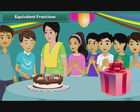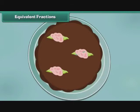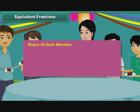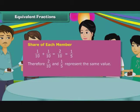Equivalent fractions. Let us take a second look at Rishabh's birthday cake. It is divided into ten equal parts. Suppose none of Rishabh's friends is interested in the cake. Hence, Rishabh offers two pieces of cake to each member of his family. Each member gets one-tenth plus one-tenth, which equals two-tenths of the cake, which is the same as one-fifth of the cake. Therefore, two-tenths and one-fifth represent the same value. Such fractions are called equivalent fractions.